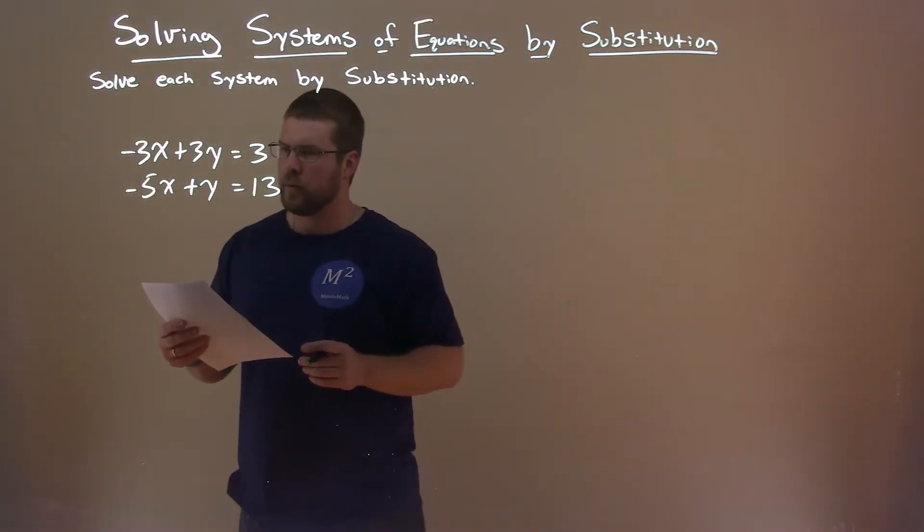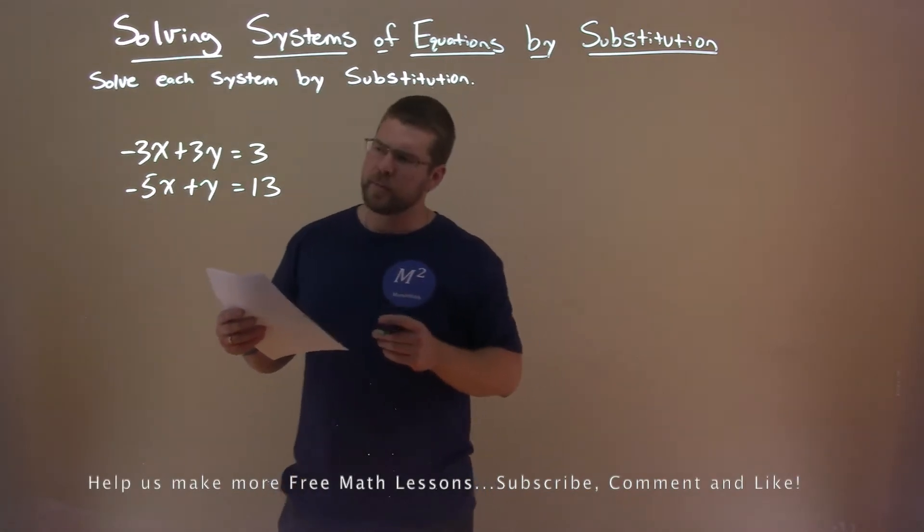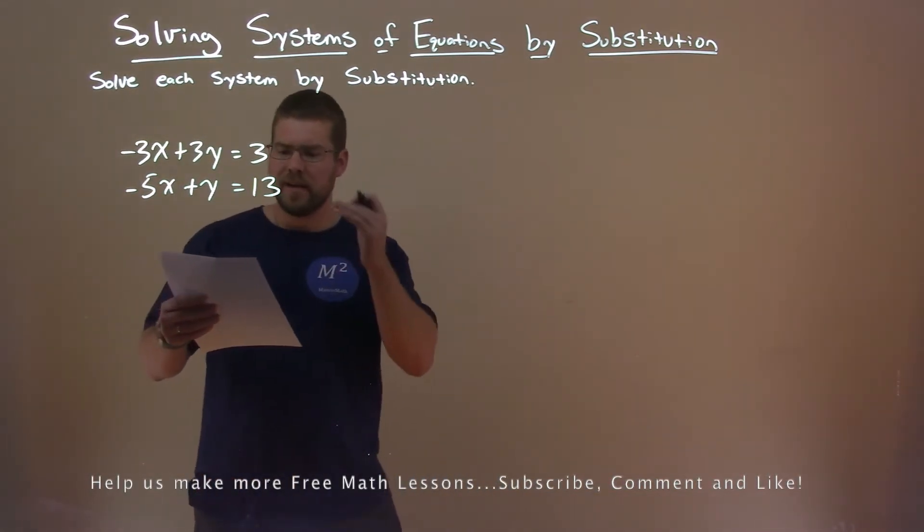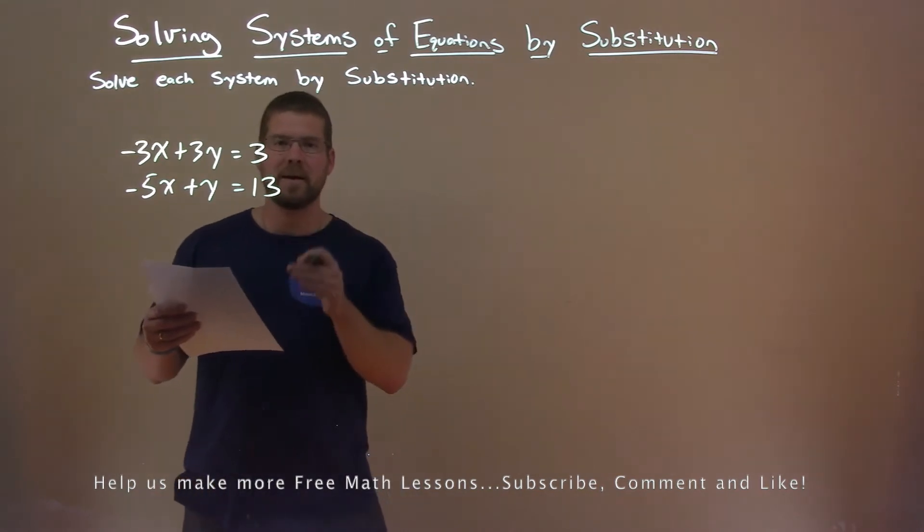We're given this problem: -3x + 3y = 3, and -5x + y = 13. We want to solve this system by substitution.